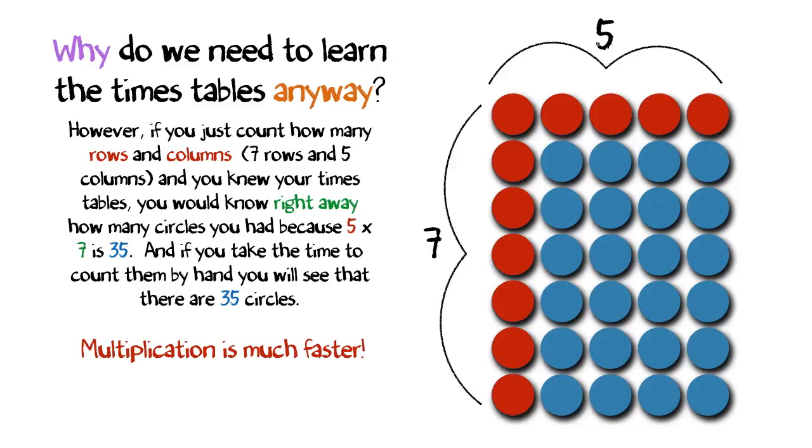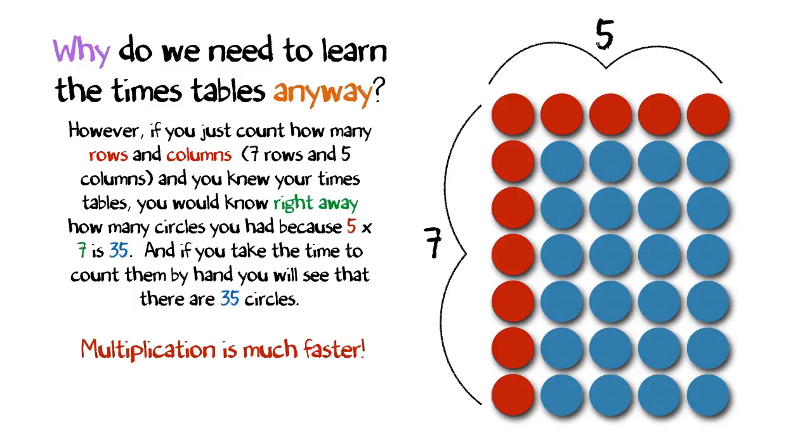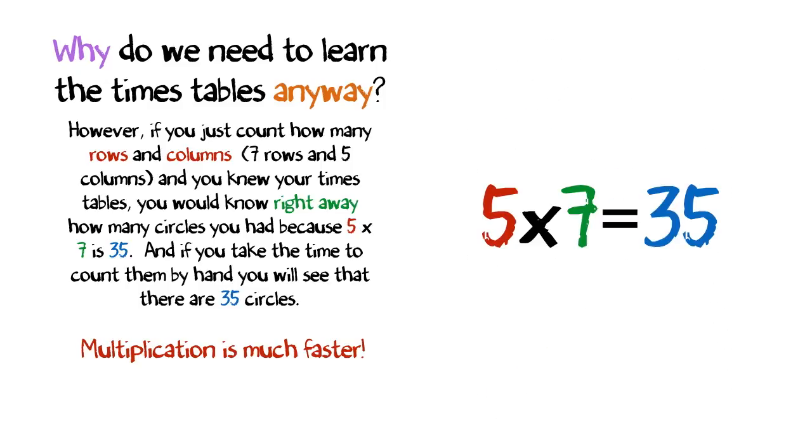However, if you just count how many rows and columns, 7 rows and 5 columns and you knew your times tables, you would know right away how many circles you had because 5 times 7 is 35. And if you take the time to count them by hand you will see that there are 35 circles.